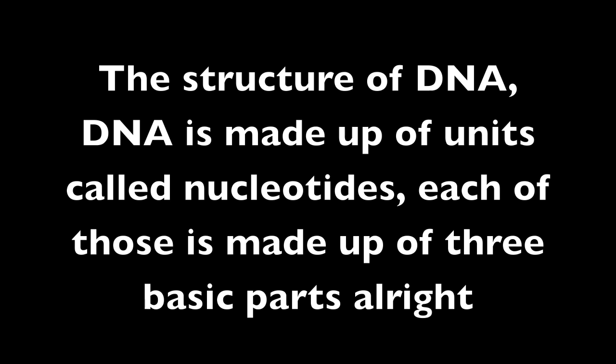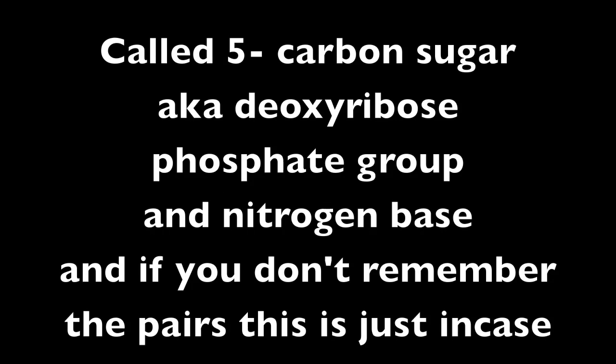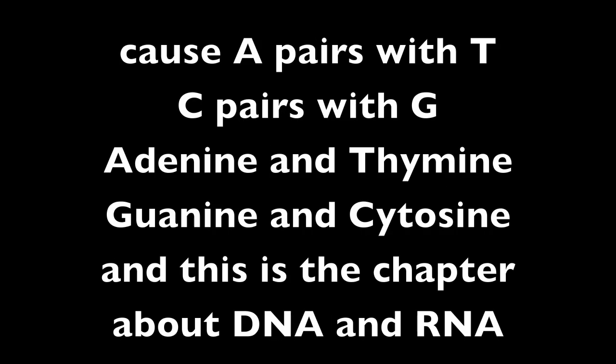DNA is made up of units called nucleotides. Each of those is made up of three basic parts: a 5-carbon sugar, aka deoxyribose, a phosphate group, and a nitrogen base. And if you don't remember the pairs — A pairs with T, C pairs with G, adenine and thymine, guanine and cytosine — this is the chapter about DNA and RNA.